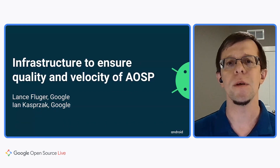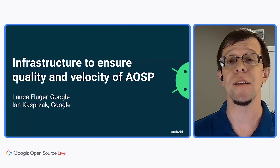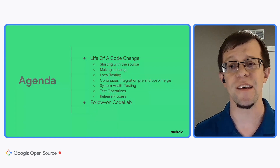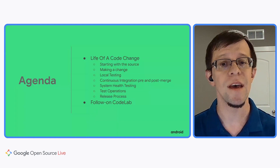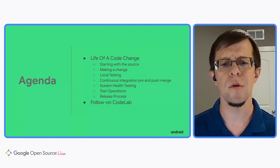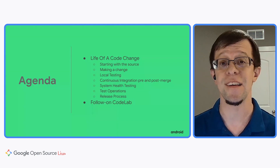Hello, I'm Ian Kasperczak, technical lead for the Android Open Source team, and my co-presenter today is Lance Pflueger, engineering manager leading the system health and multi-device testing efforts for Android. Today, we'll be talking about how we use Google's infrastructure to ensure both quality and velocity when developing Android in the open source. We're going to start by following the life of a change list, or CL, that is created, reviewed, tested, and submitted through the Android Open Source branch. We will conclude with how to find the Android Codelab so you can experience all of this yourself after today's sessions conclude.